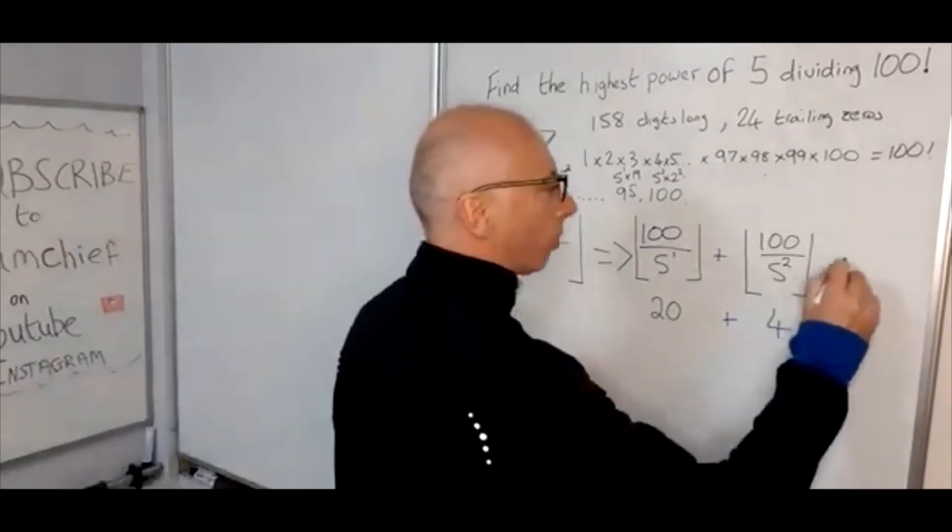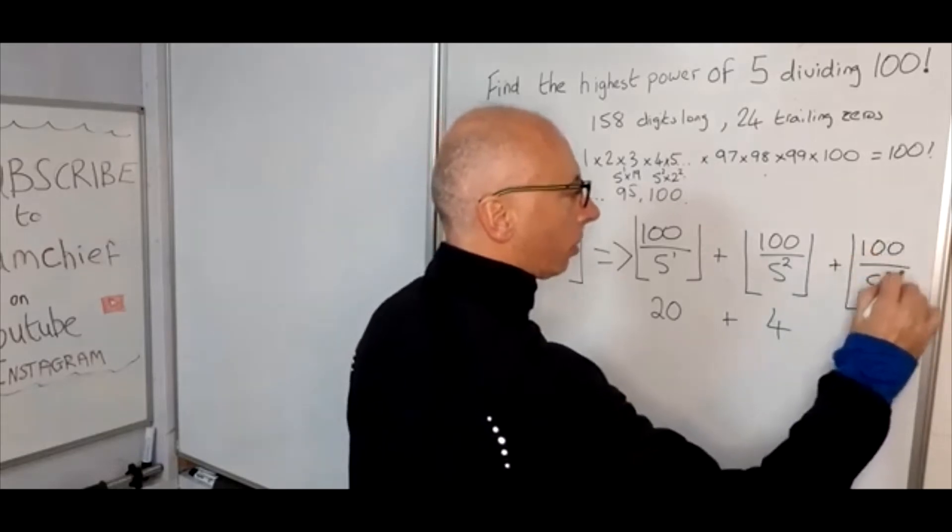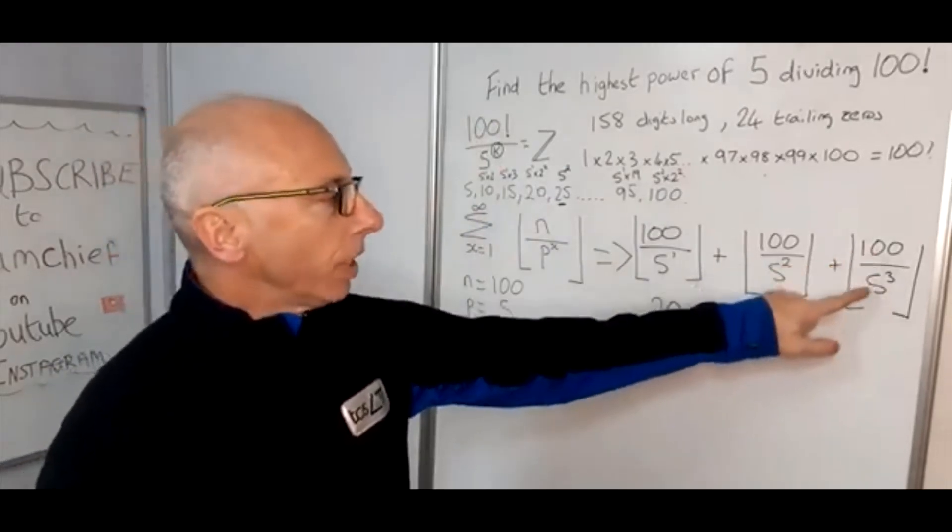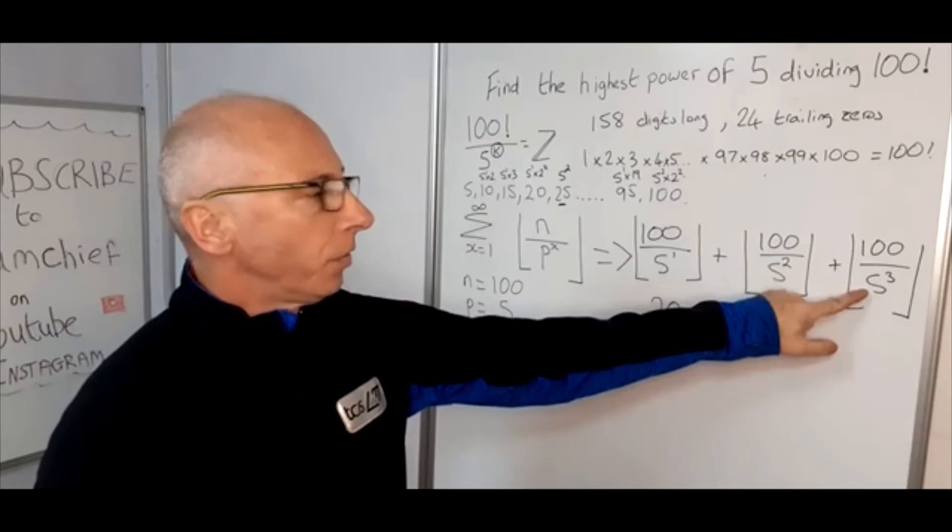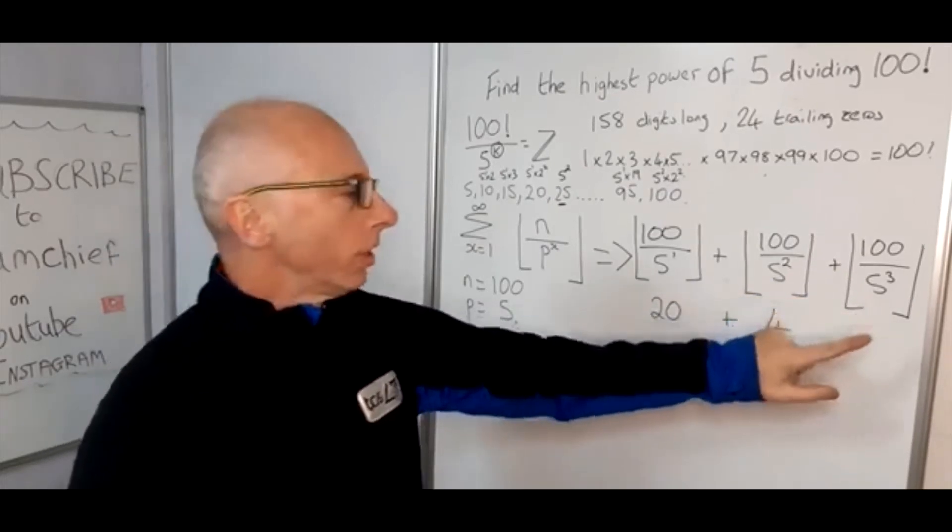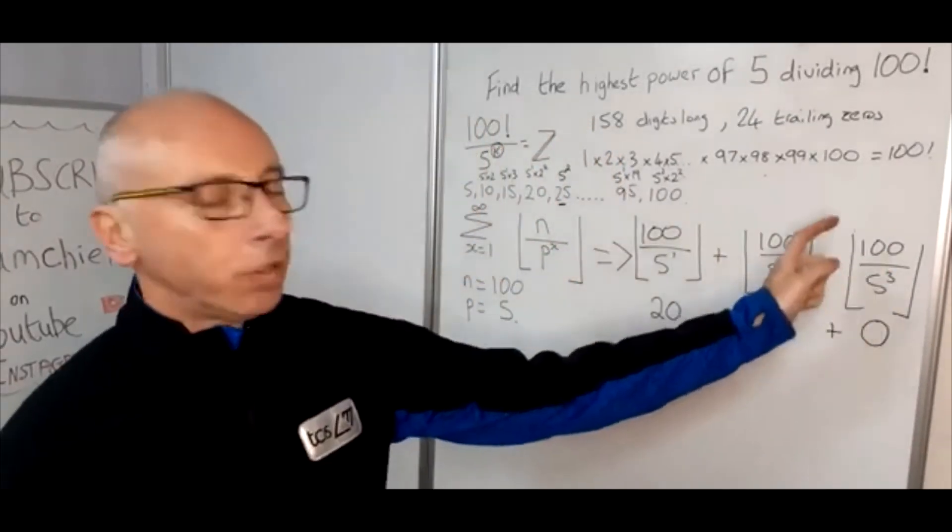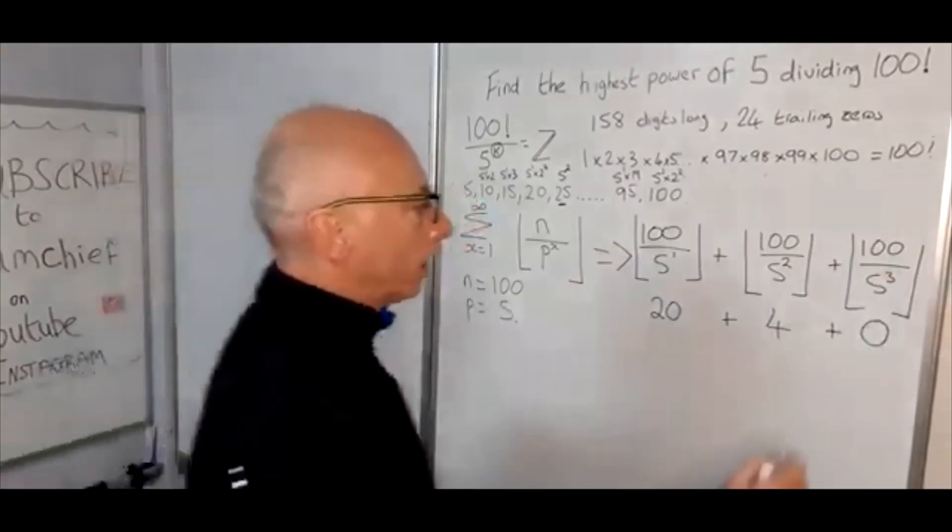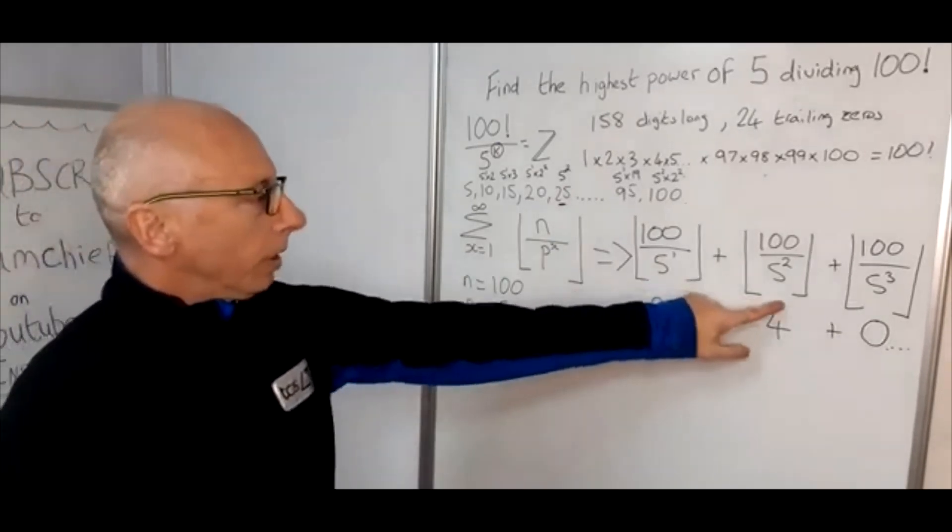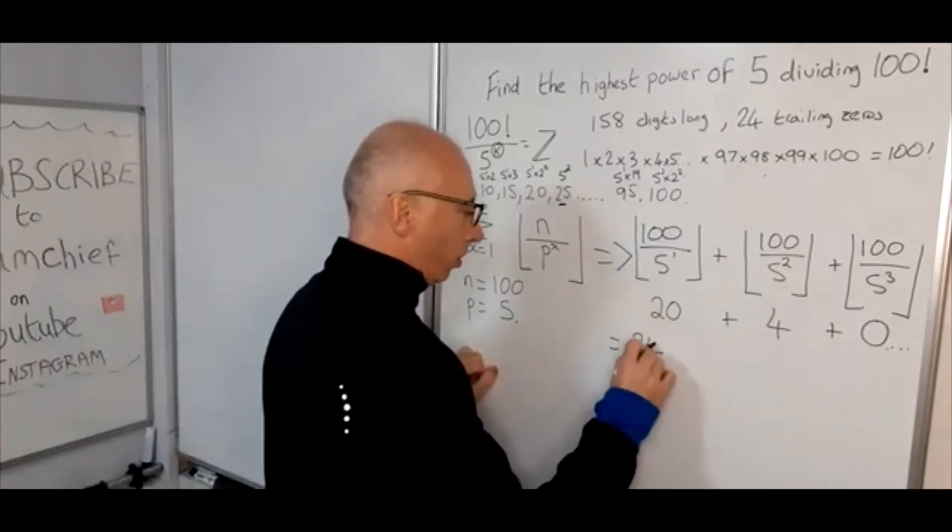But when we come to the next one, x equals 3, so plus 100 divided by 5 cubed. We'll see here 5 cubed is 125. 100 divided by 125 is 4 fifths, but 4 fifths is less than 1, so in the floor function that will become 0. And then obviously if we go 5 to the power of 4, that will keep going to 0 and 0 on forever and ever. So if we add up these numbers here, we have 20 plus 4, so that's going to give us 24.